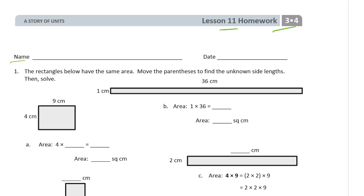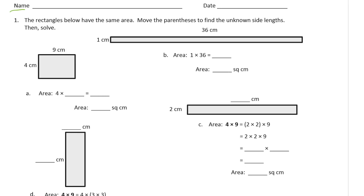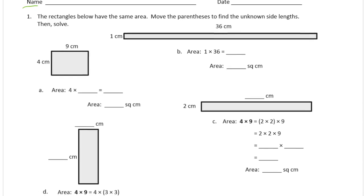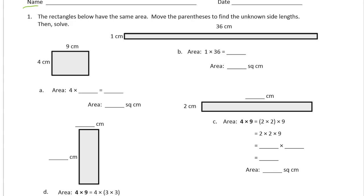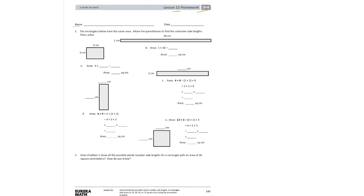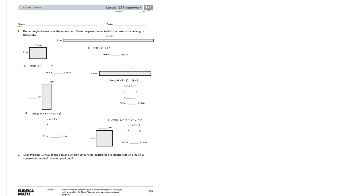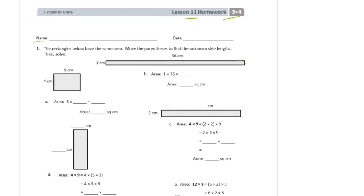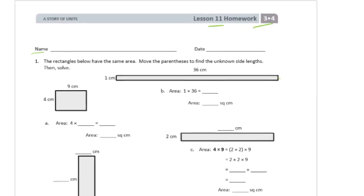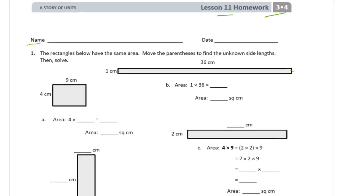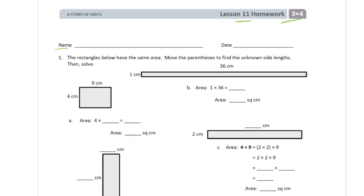Please write your name first. We're looking at rectangles below. These all have the same area — this long skinny rectangle, this square, and the one that's a little bit thicker. All five of these have the same area. It says move the parentheses to find the unknown side lengths.